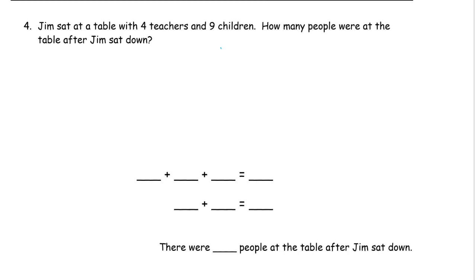So Jim sat at a table with four teachers and nine children. How many people were at the table after Jim sat down? So this one is a little puzzle for you. If you're just looking at the numbers and not reading the words, you see there's a four and a nine. You don't make ten with those. But if you read this, Jim sat down. So Jim is also sitting down, so there's one more person.